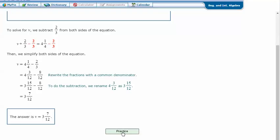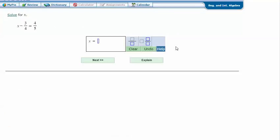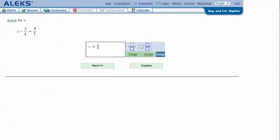Let's try another one. Solve for x. X minus three-fourths equals four-fifths.